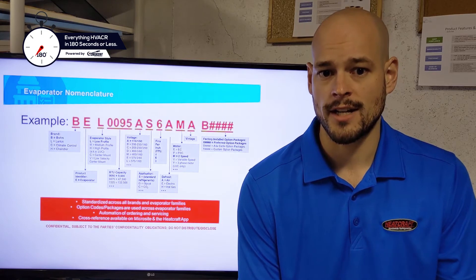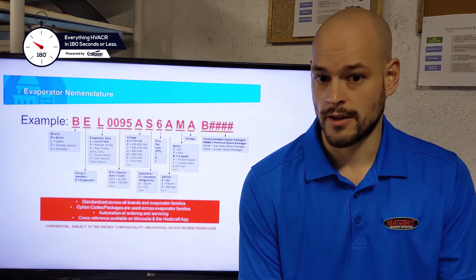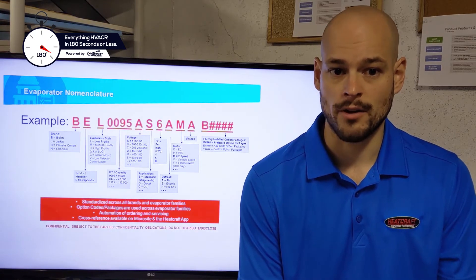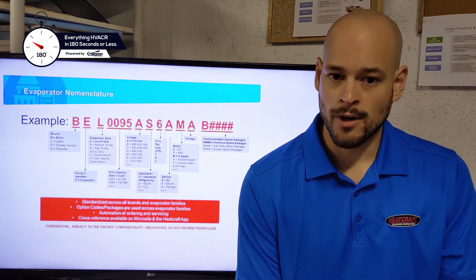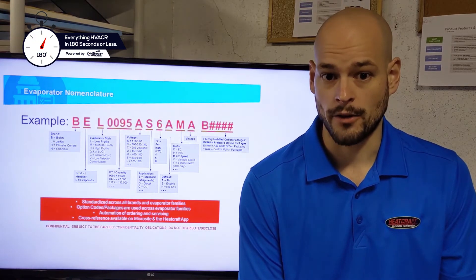Your next digit is going to indicate fins per inch. In the past, you could find this on all the Larkin units. In every model, the fins per inch code was included, but on none of the other brands. Now, we're going to include that on every brand, so you'll be able to know fins per inch on everything you have, just from the model number.